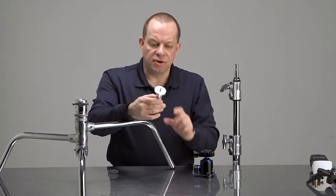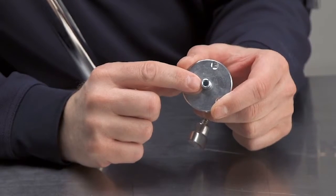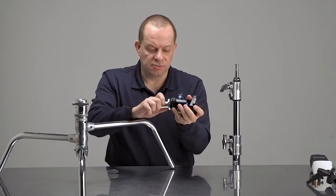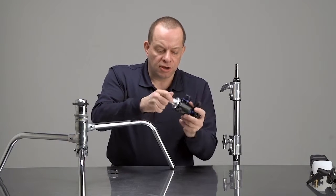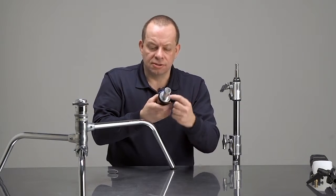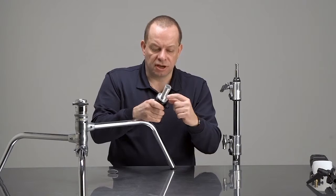So that we can take a ball head like we have here, this Benro ball mount, and we can mount it onto here. We also can lock the three set screws that you see on the bottom of this ball head adapter.